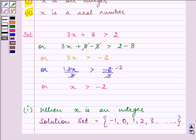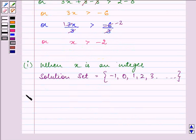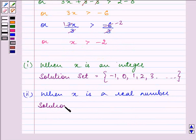And when x is a real number, then the solution set consists of all the elements which are greater than minus 2, so it will be minus 2 to infinity, an open interval where minus 2 and infinity are not included.